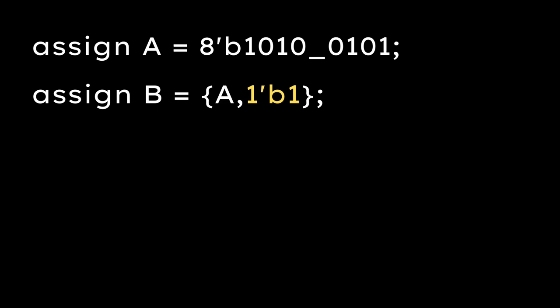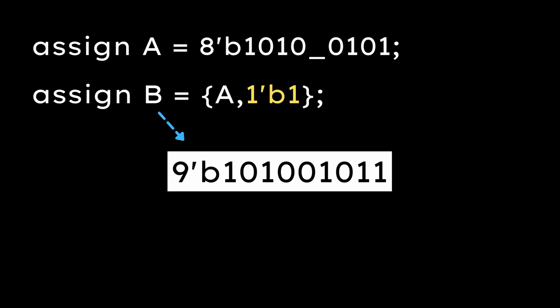Now, let's take one more case. Here, B is concatenation of A and 1'b1. It will be straight forward as A is 8 bits and 1'b1 is 1 bit. So, B will be this 9 bit result.